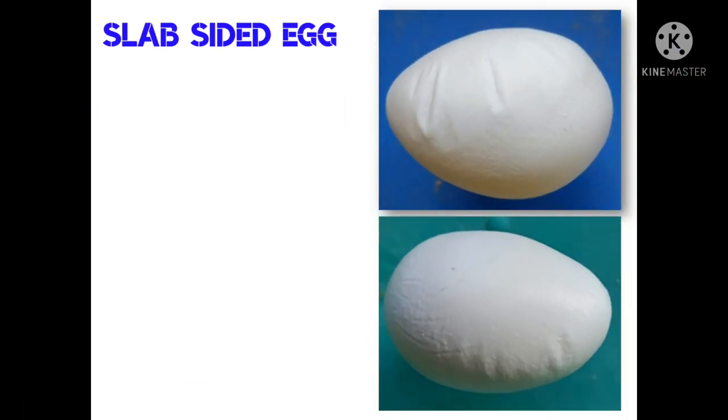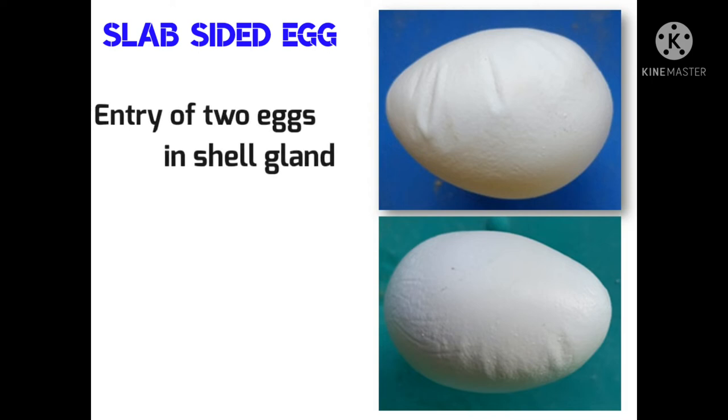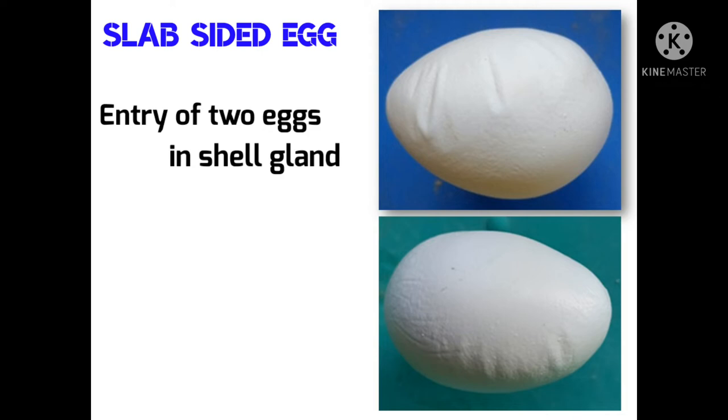This eggshell defect is called slab sided or flat sided eggs. When two eggs enter the shell gland pouch shortly after another, normal calcification is interrupted. The second egg will not be as complete as the first and may be flattened at the side where the eggs made contact, resulting in a flat or slab side.